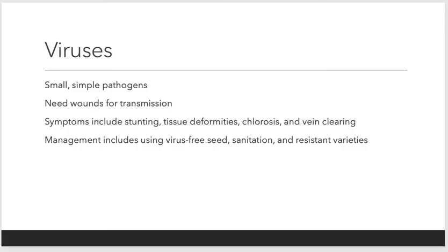Viruses are very small, simple pathogens. They typically need some type of wound for transmission. Symptoms we'll see include stunting, tissue deformity, chlorosis, or vein clearing. Management: try to find virus-free seed — that should be number one on your list. Sanitize equipment if you think virus is present. Find resistant varieties, as researchers have found and bred varieties of plants that can fight against it so we can still reap the crop.